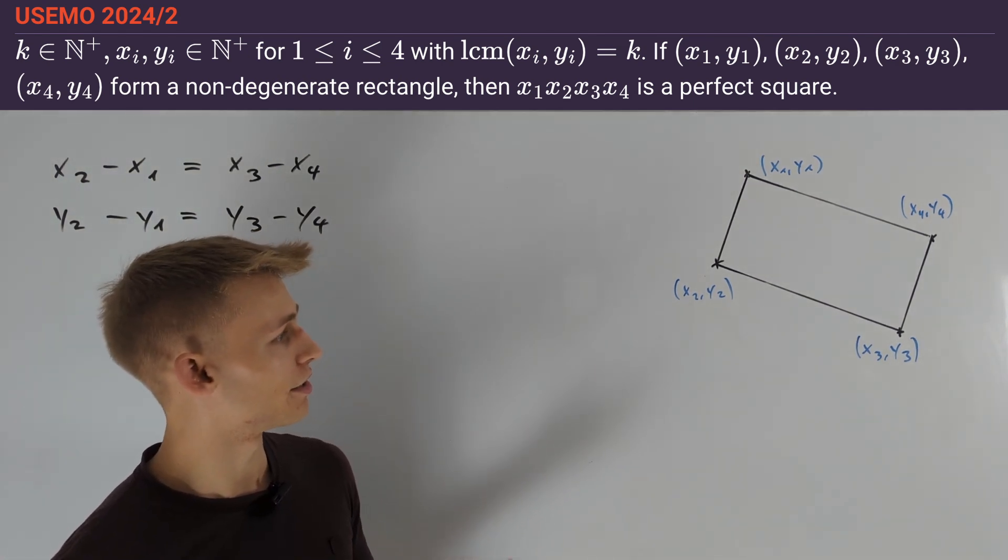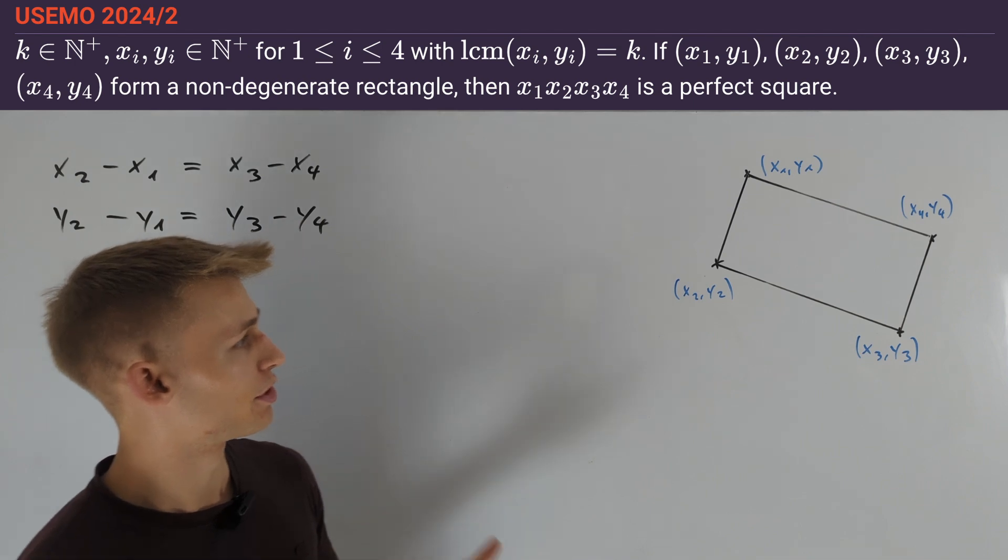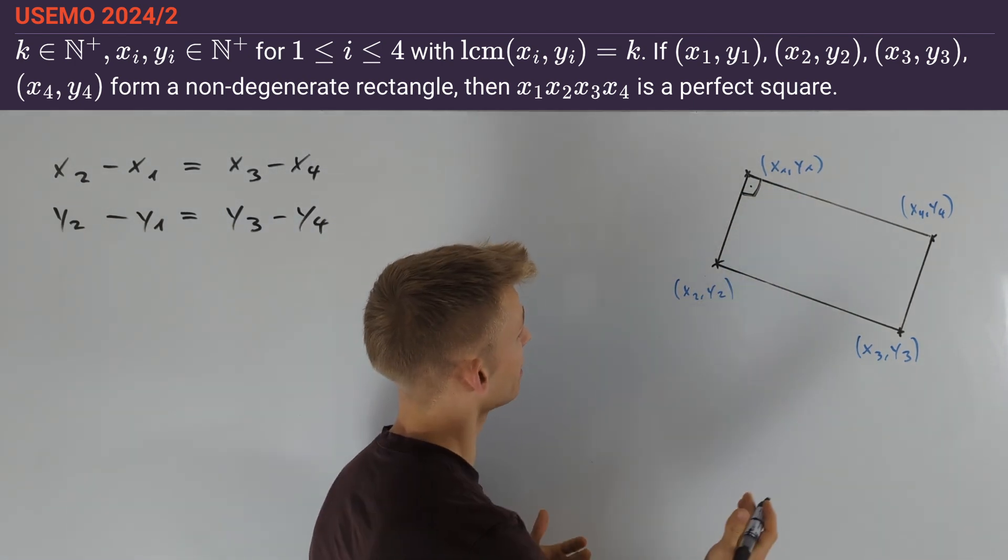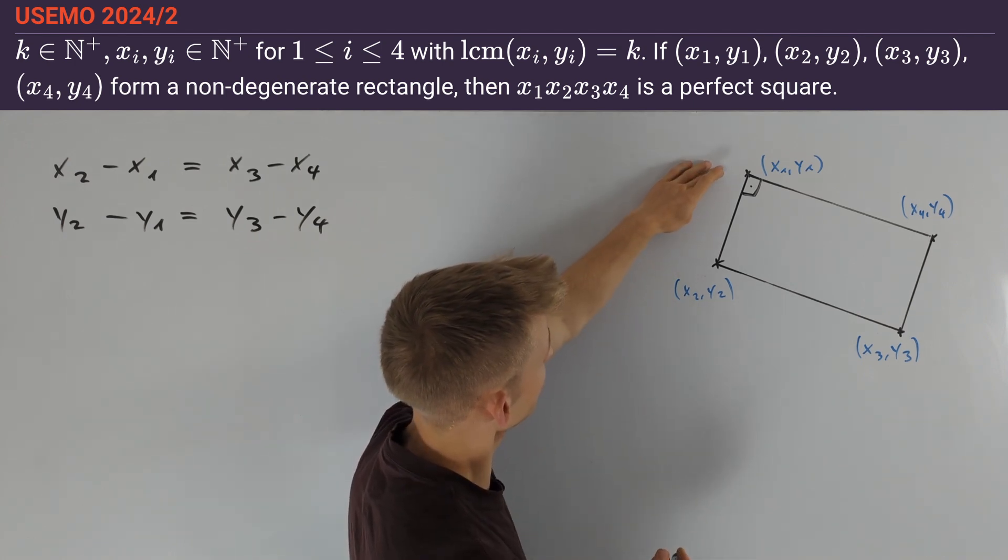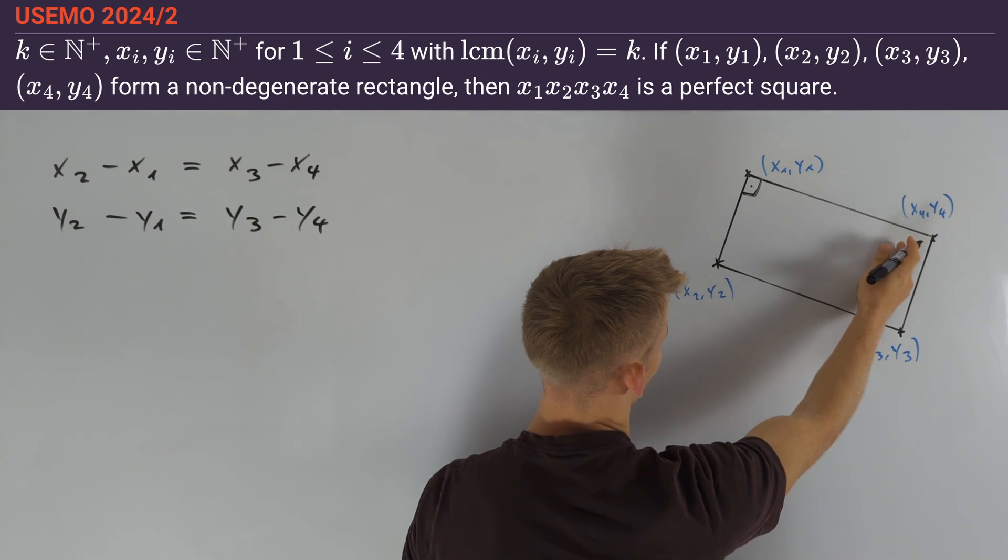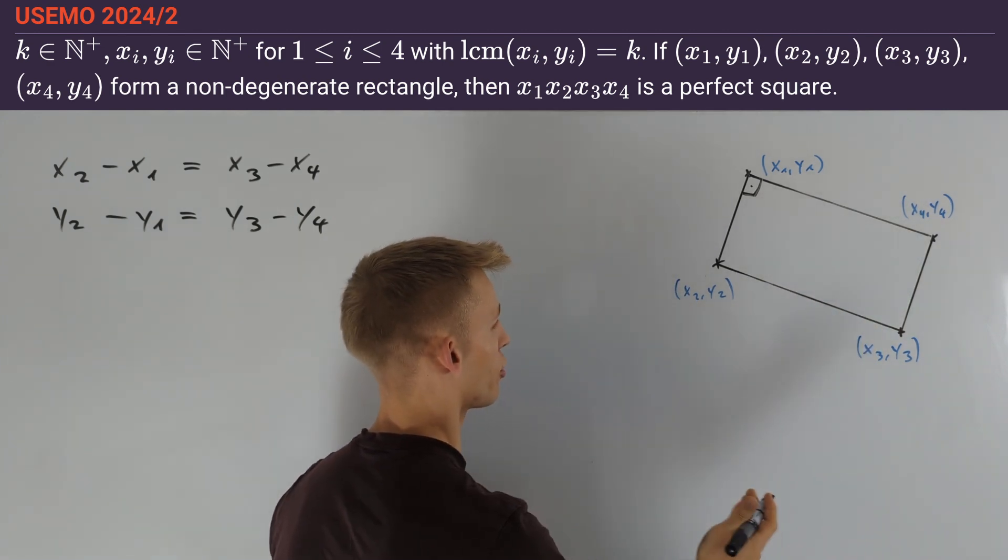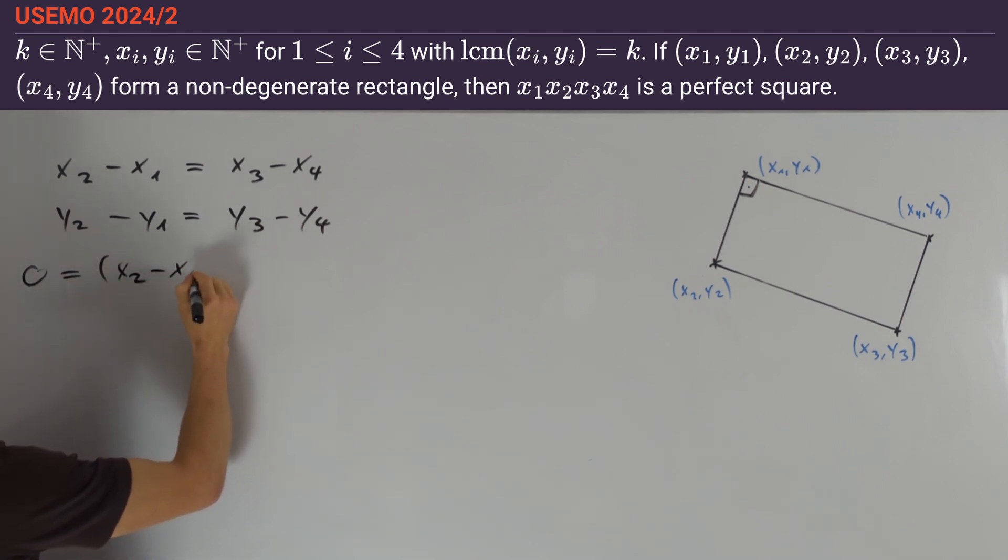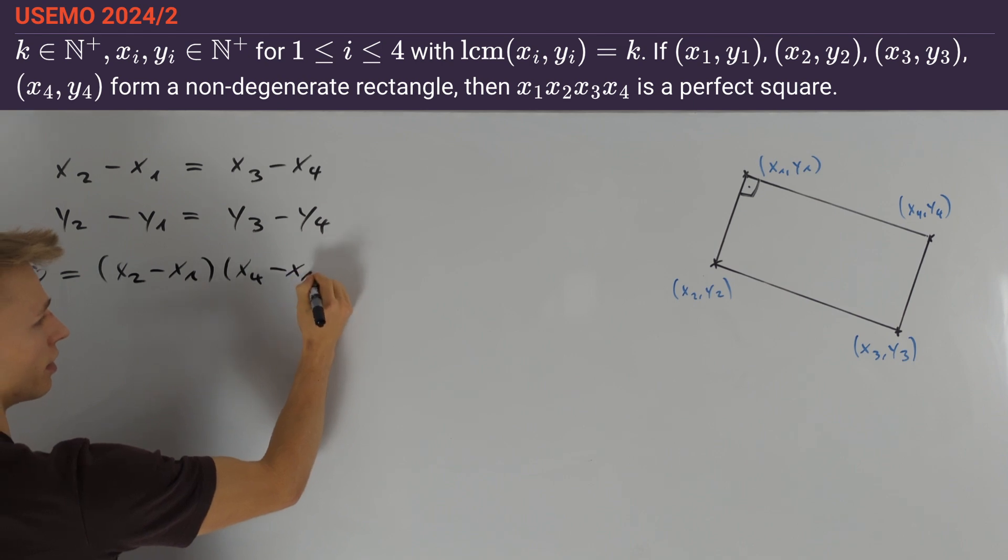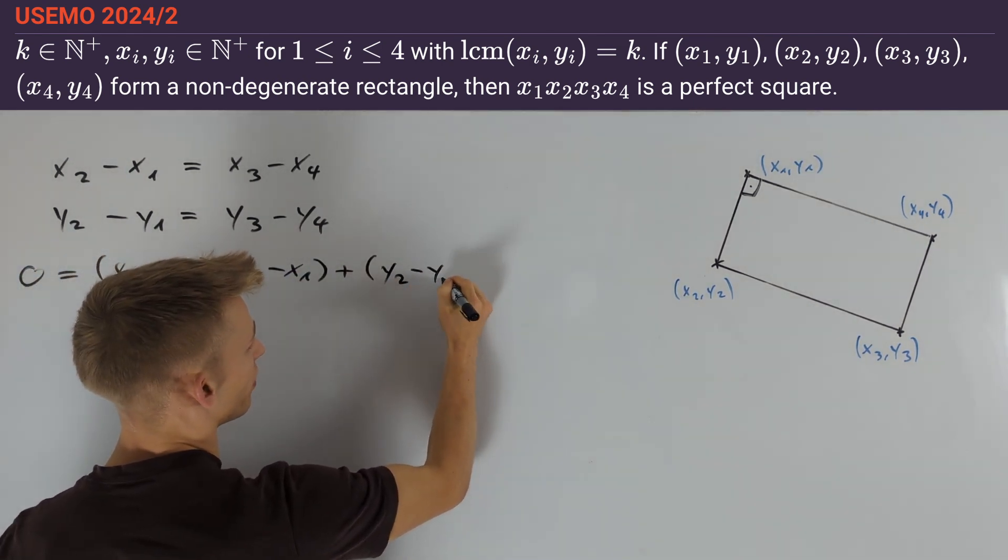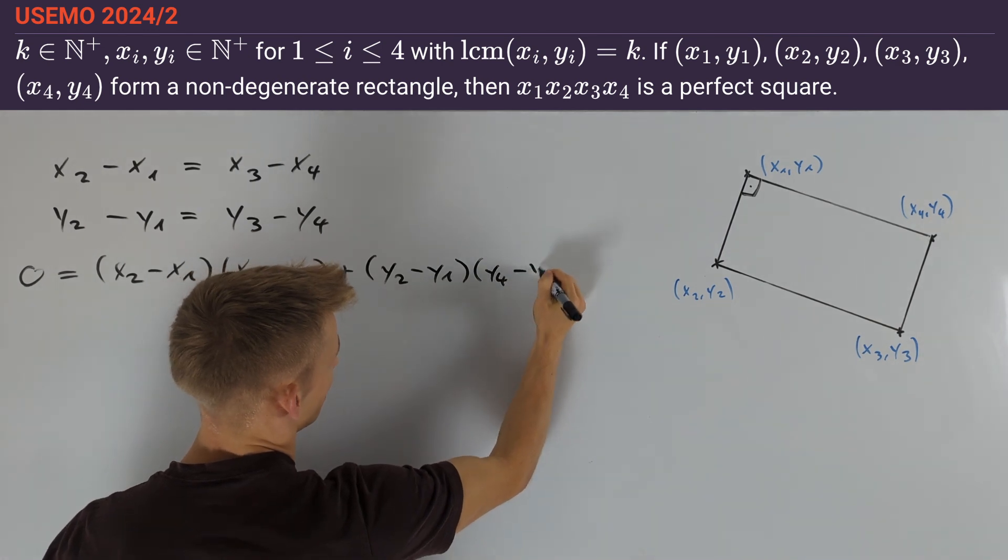Let's get another equation which uses the fact that we have a right angle inside the rectangle. This implies that the vector from point 1 to point 2 is orthogonal to the vector from point 1 to point 4, and therefore their scalar product is equal to zero. Therefore we get that zero equals (x2 - x1)(x4 - x1) plus (y2 - y1)(y4 - y1).